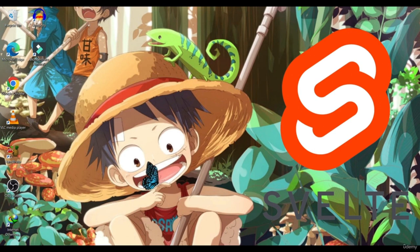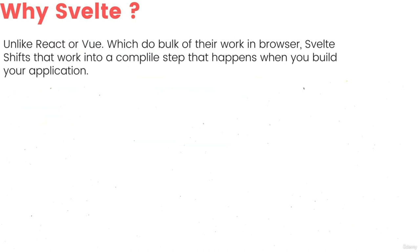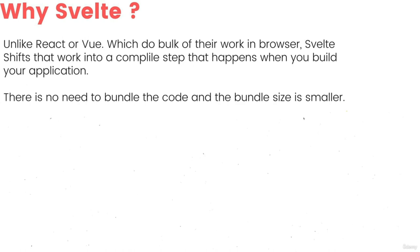So Svelte is a component framework for building web applications. You can use it to progressively build an existing application or build an entire single page application from scratch. The more interesting question is why Svelte, or how is Svelte better compared to other frameworks or libraries like React and Vue? Unlike React or Vue which do a bulk of their work in the browser, Svelte shifts that work into a compiled step that happens when you build your application, so there is no need to bundle the framework code and the bundle size is smaller.